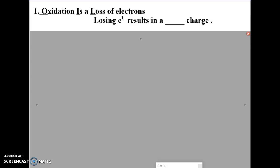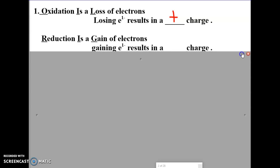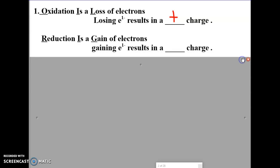Oxidation is a loss of electrons — OIL. Losing electrons results in a positive charge. If you lose a negative charge, you become positively charged. Electrons are negatively charged, so you lose an electron, you become more positive. Just a general idea: if you lose some negative, you become more positive. Reduction is a gain of electrons — RIG. If you gain some negative electrons, you gain negative charges and become negatively charged.